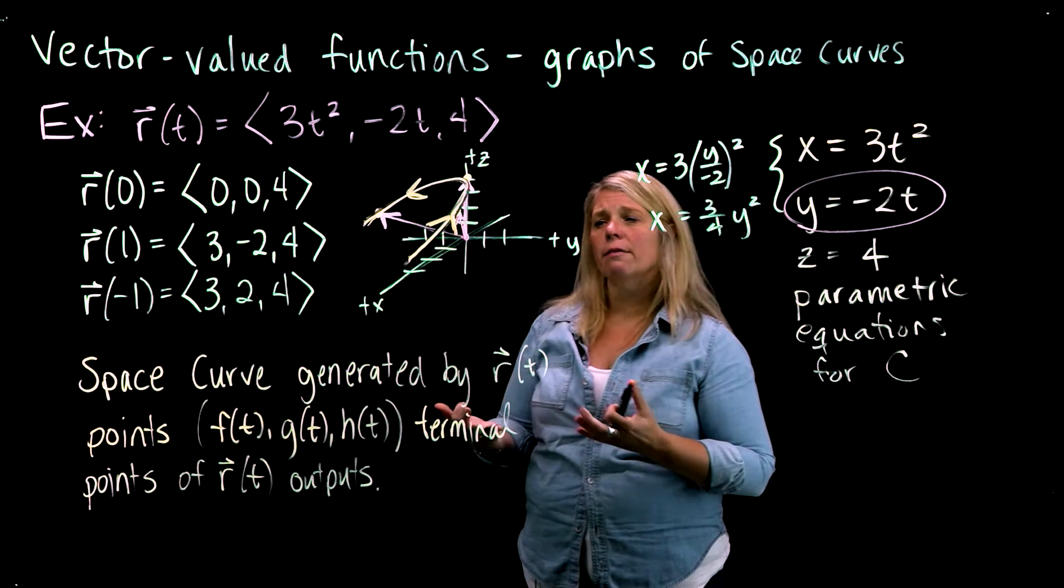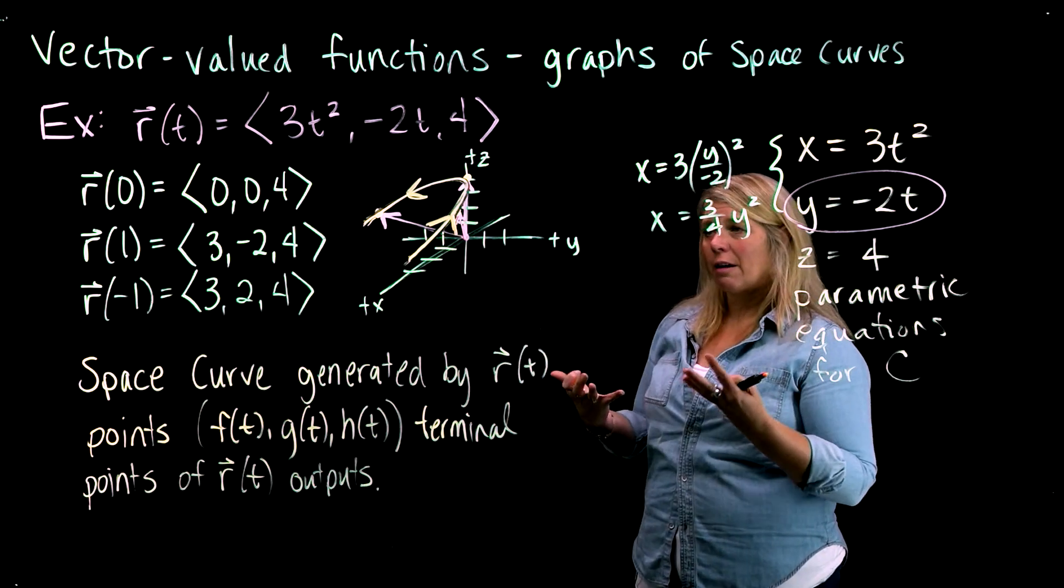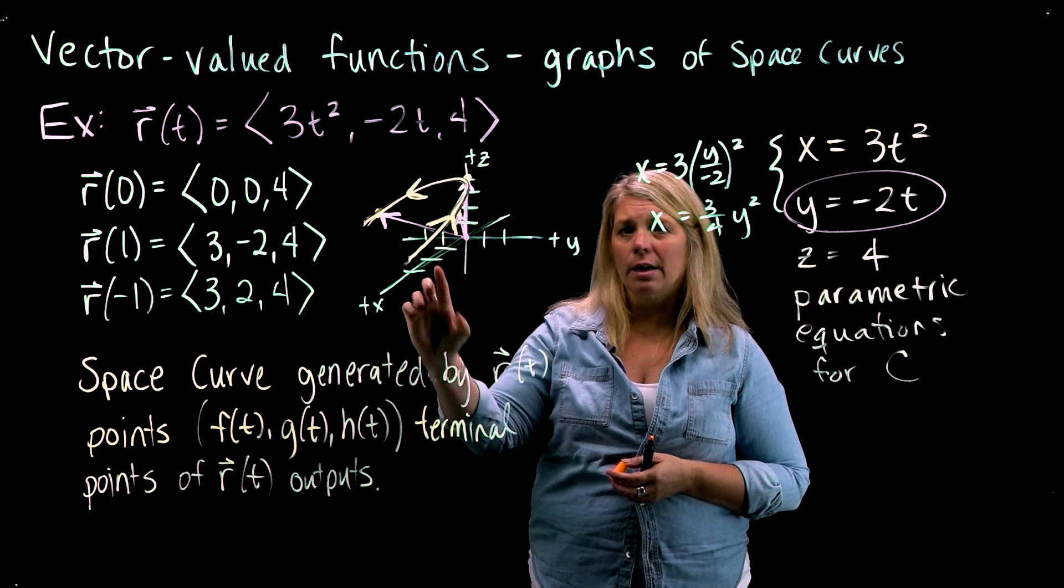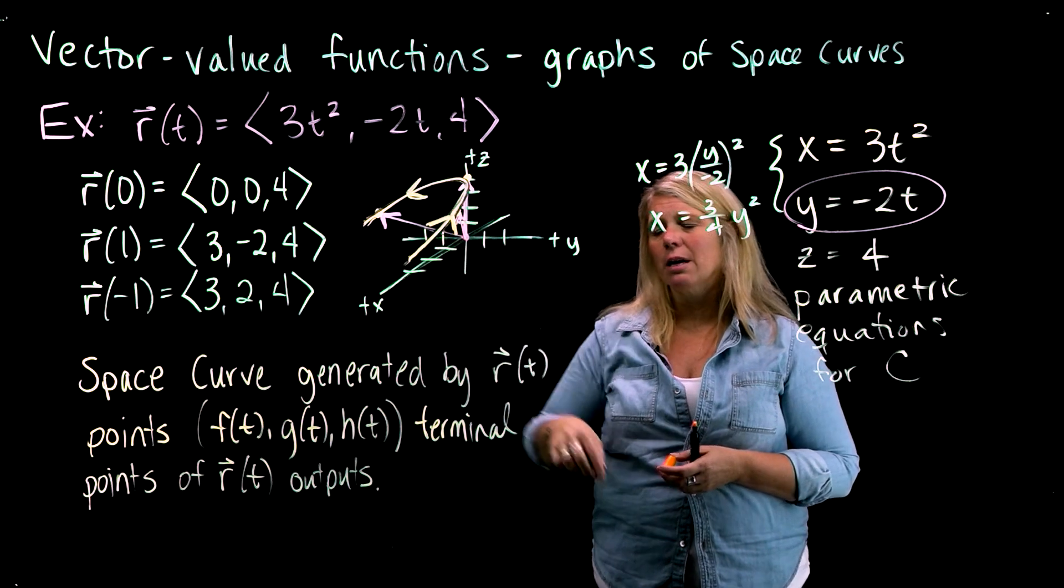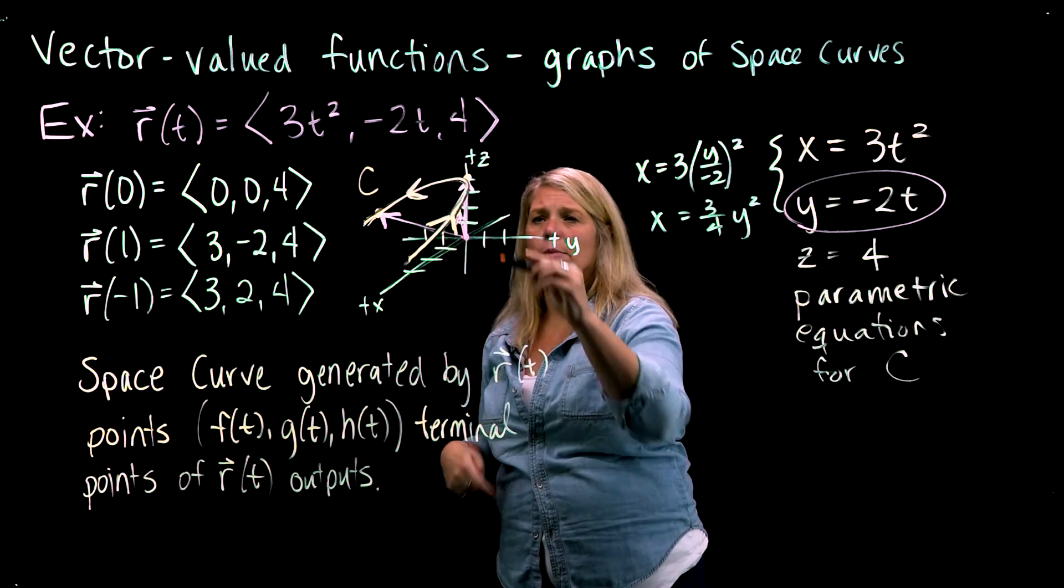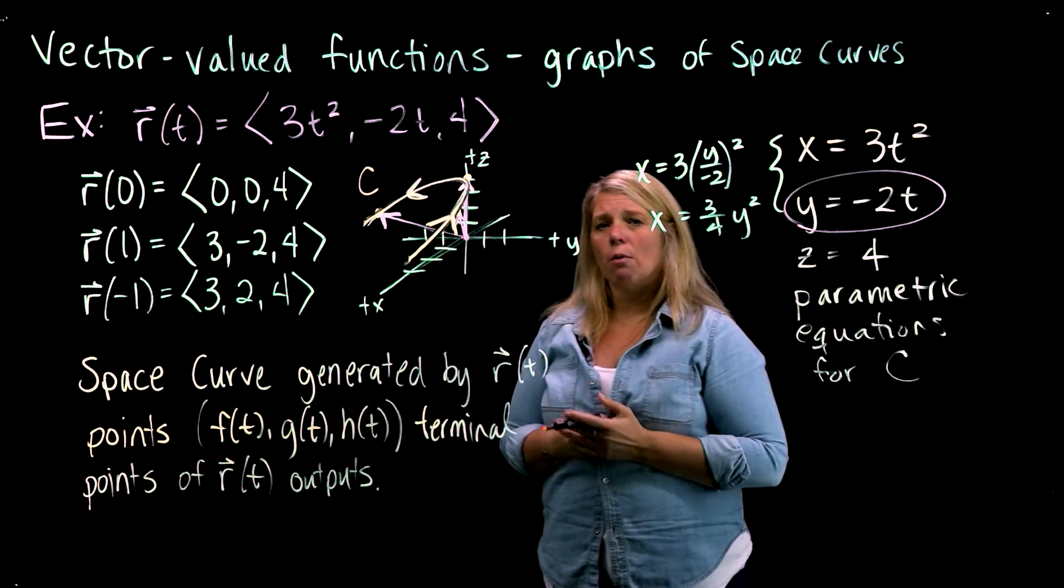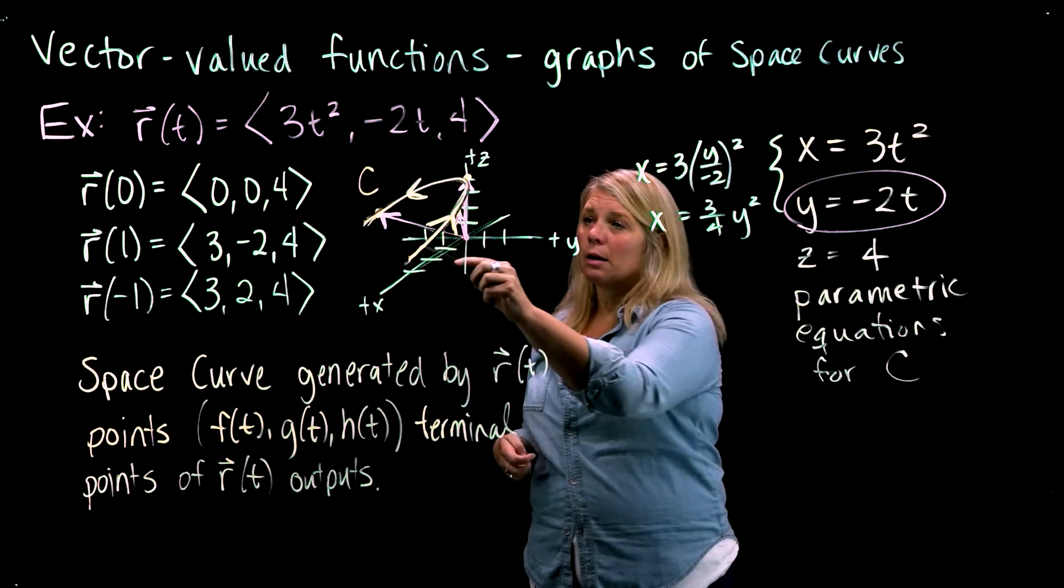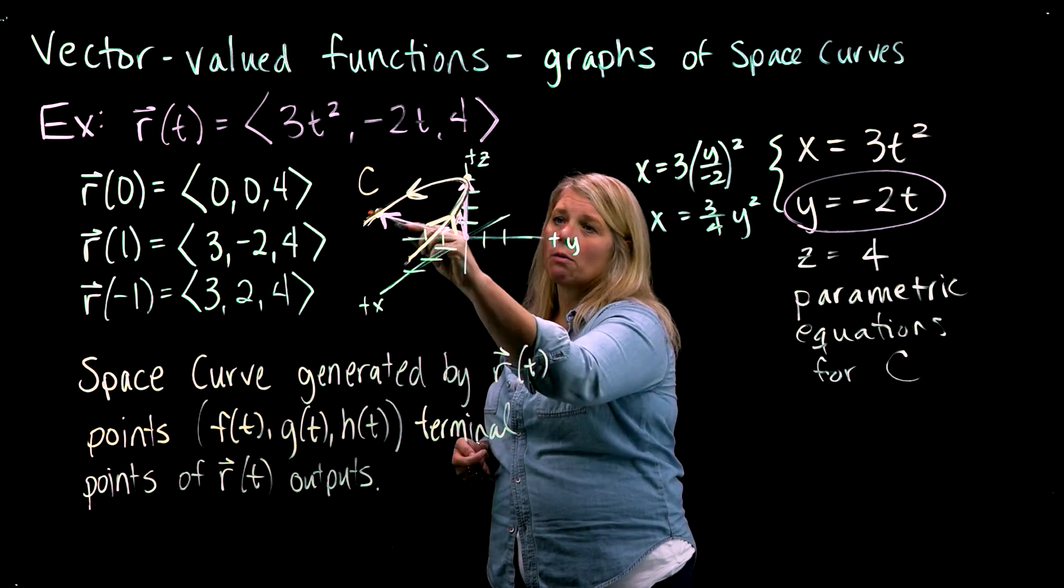All right, so this space curve is really just this parabola. If I really wanted to just graph the space curve, perhaps I wouldn't show these vectors on here. I would just have this space curve up here. Depending on how perfect you want your graph to be, maybe you do some labels, you plot some points, show where that's at at t equals 0, t equals 1, for example. But this curve here is often what we'll actually look at.